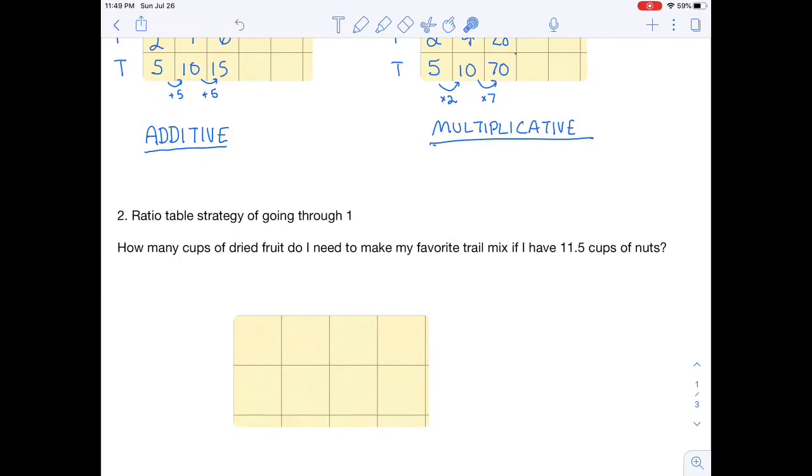How many cups of dried fruit do I need to make my favorite trail mix if I have 11 and a half cups of nuts? Well, the problem here with nuts and fruit, three and two, is that I can't just add three plus three plus three and get up to 11 and a half. 11 and a half is not a multiple of three. So the strategy I'm going to use is going through one.